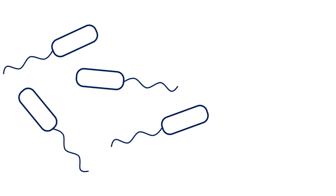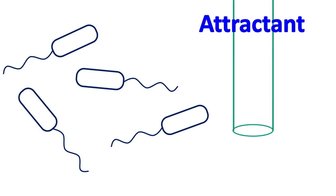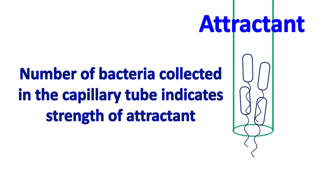To study chemotaxis, a suspension of cells can be treated with an attractant or repellent filled in a capillary. As the attractant diffuses from the end of the capillary, the cells start moving up the tube. The number of cells collected in the capillary tube indicates the strength of the chemoattractant.